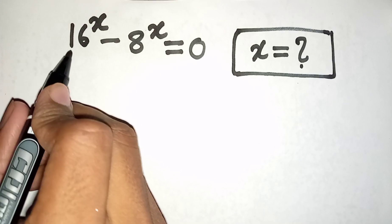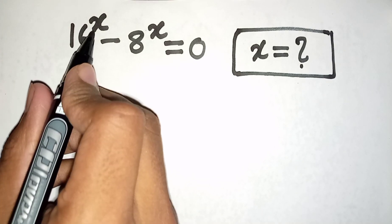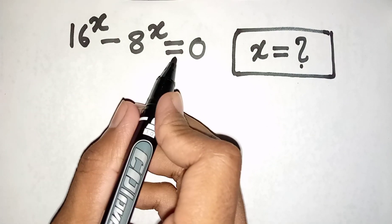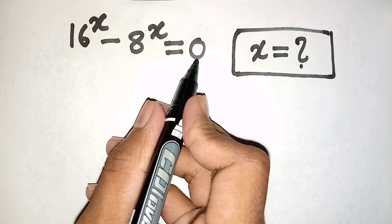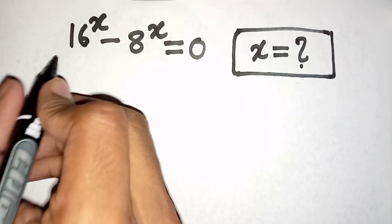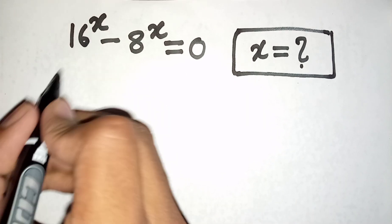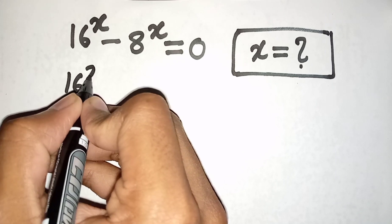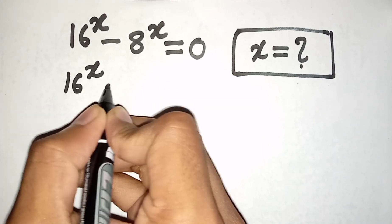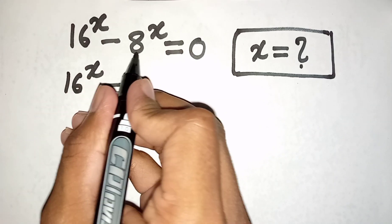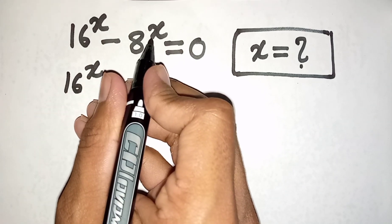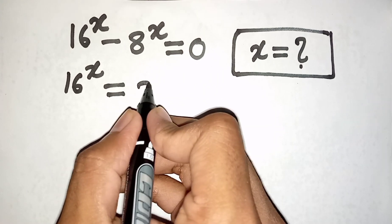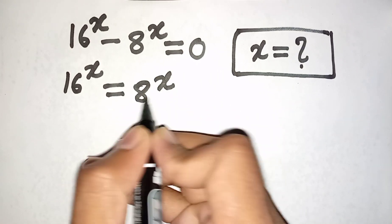How to solve 16 power x minus 8 power x is equal to 0. Find the value of x. So we have 16 power x is equal to minus 8 power x. Take to the right side, so this will be plus 8 power x.